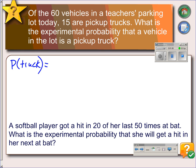The number of trucks in the lot is 15, and the total number of trials would be the total number of vehicles, which is 60. So if we divide this, we get 0.25. So the probability that a vehicle is a pickup truck is 0.25, or we could write that as 25%, or we could leave it as a fraction.